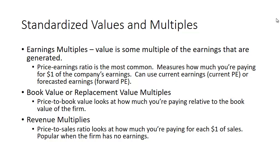Now let's look at values and multiples. Earnings multiples represent the value of some multiple of the earnings generated. The price-to-earnings ratio is the most common — it measures how much you're paying for $1 of the company's earnings, taking price and dividing it by earnings. You can use the current earnings, past earnings (usually TTM, trailing 12 months), or forecasted earnings — what we think earnings will be in the future.